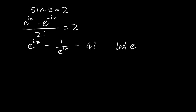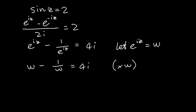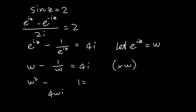Now I'm going to let e to the iz equal to w. So I have w minus 1 over w equal to 4i. Multiplying through by w gives w squared minus 1 equal to 4wi. Rearranging all of this, I get w squared minus 4wi minus 1 is equal to 0.